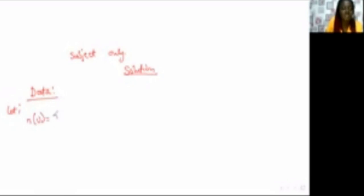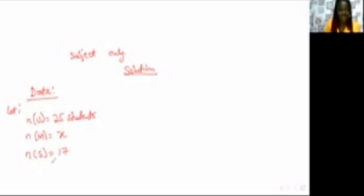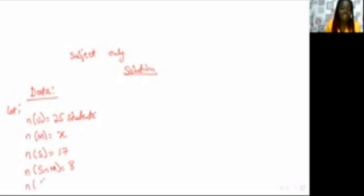The universal set they gave us is 25 students. The number of students who passed in Mathematics is unknown, so we represent it with variable X. The number of students who passed in Science is 17. The number who passed in both Science and Mathematics is 8. The complement — those who did not pass in any subject — is 3. Now we draw our Venn diagram.